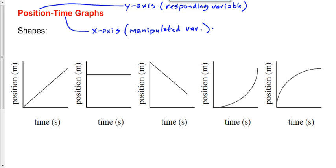The position is increasing as time goes by, and it's doing so at a constant rate. If the position is increasing at a constant rate, what's a nice two-word summary? Constant velocity. A car is driving to Calgary — it's not speeding up and it's not slowing down. If it were a distance-time graph, we'd say constant speed. Since it's a position-time graph, we say constant velocity.